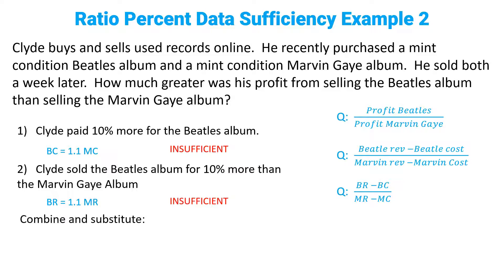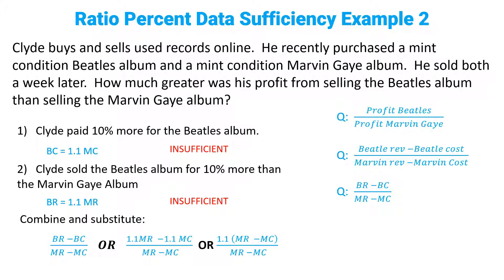What if we combine them? If we combine and substitute, we get BR minus BC over MR minus MC, which becomes 1.1 MR minus 1.1 MC on top over MR minus MC on the bottom. We can factor out the 1.1 and get 1.1 times (MR minus MC) on top over MR minus MC on the bottom. The (MR minus MC) terms cancel out — that is sufficient. The answer would be C.